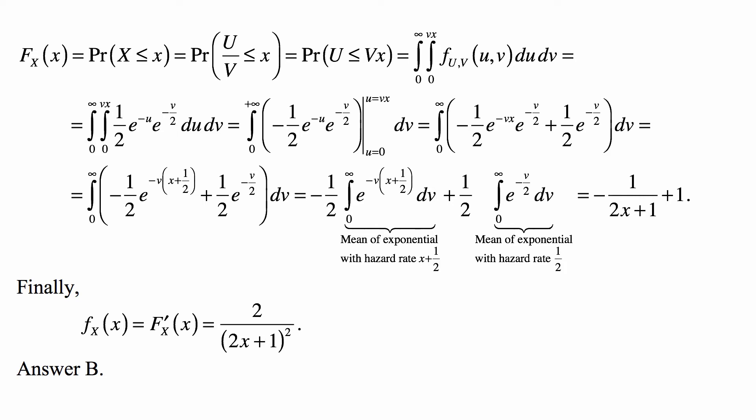The second expression is the integral from 0 to infinity of e^{-v/2} dv. That's the mean of an exponential with hazard rate 1/2. That mean is 2, and 2 multiplied by 1/2 gives us 1.